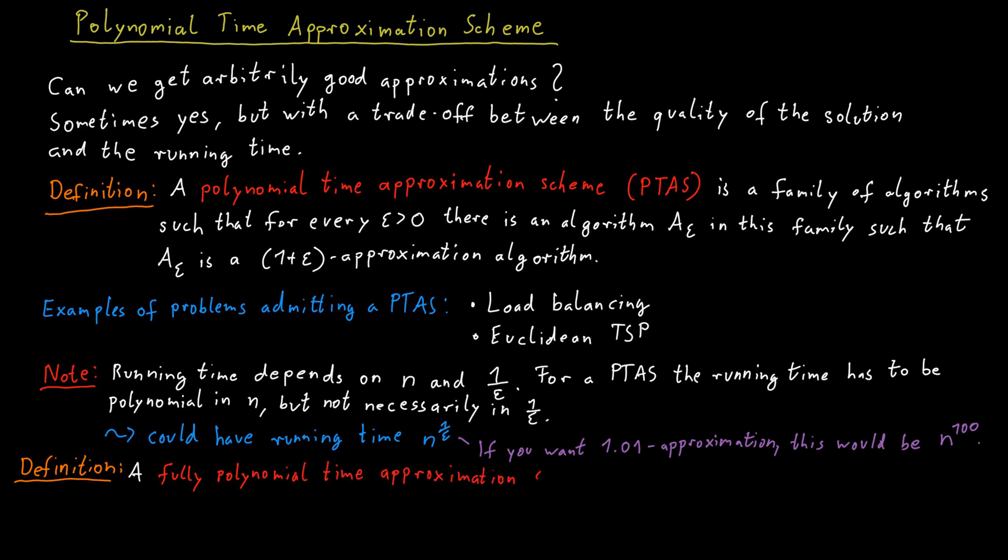An FPTAS is just the same as a PTAS. The only difference is that now we require that the running time is not just polynomial in the size of the input n, but also polynomial in 1 over epsilon.